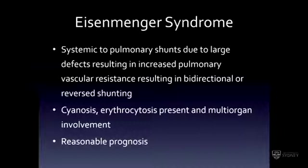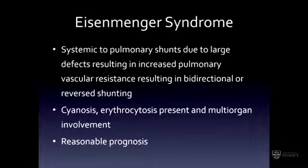Eisenmenger syndrome involves a large shunt or defect resulting in high pulmonary blood flow, damage to the pulmonary circulation, and ultimately a reversal of shunt. That's associated with multi-organ problems. But these patients have a reasonable prognosis — most surviving into their forties, fifties, and sixties, even before the advent of advanced therapies.